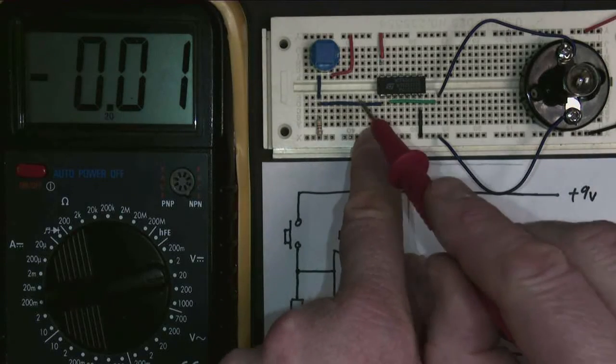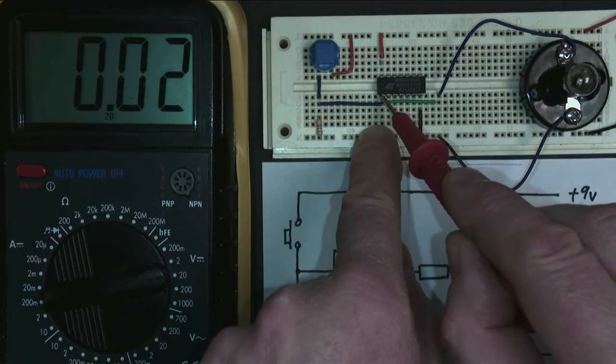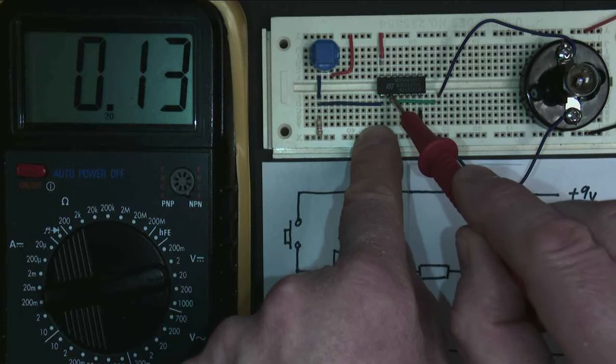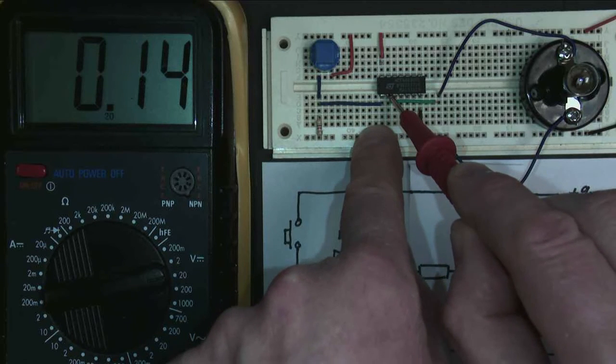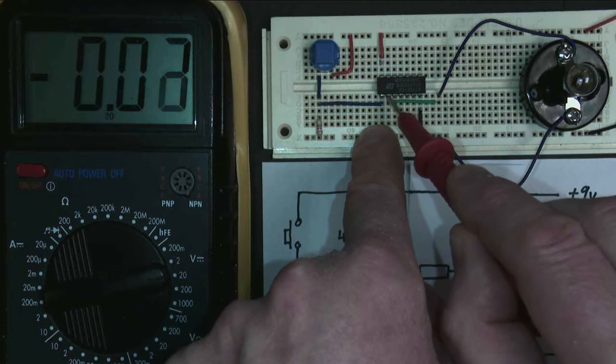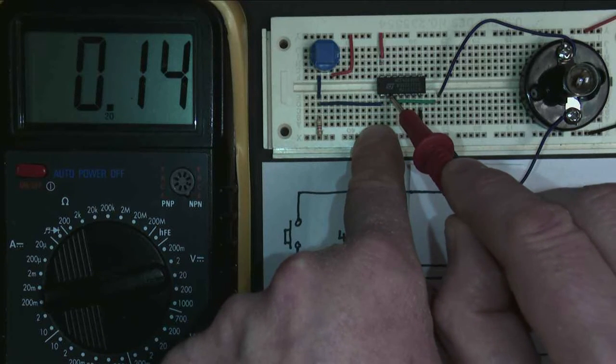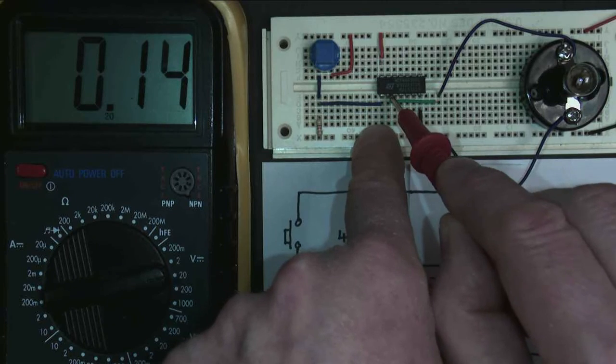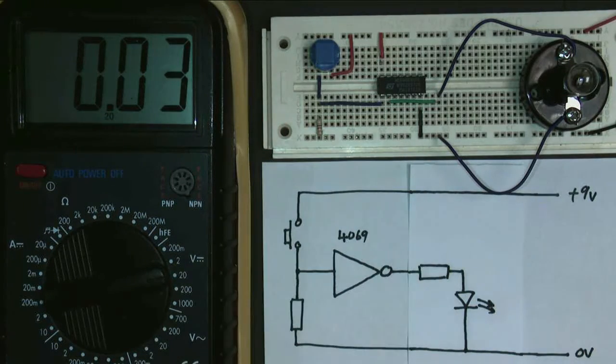So when I've got my input is logic 0, my output should be logic 1, but it's only 0.14 volts. The bulb is effectively short-circuiting the output of the logic gate. The logic gate cannot provide enough current to power the bulb. So I need to do something about this.